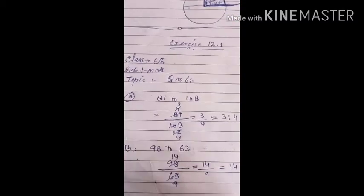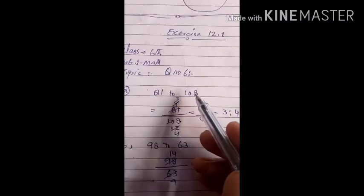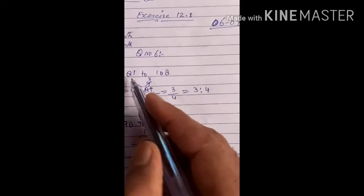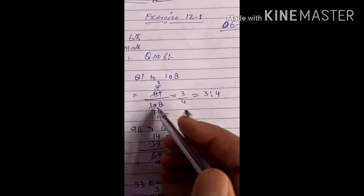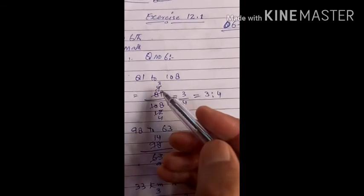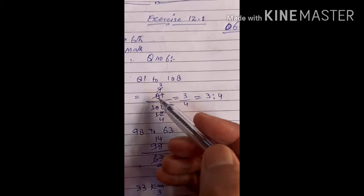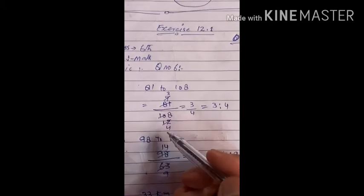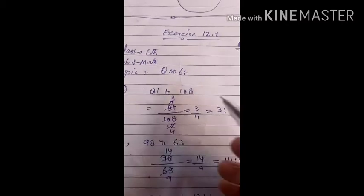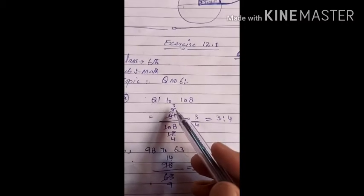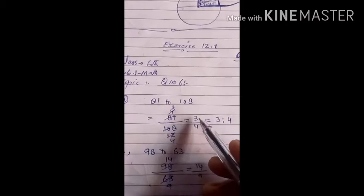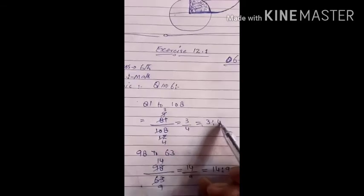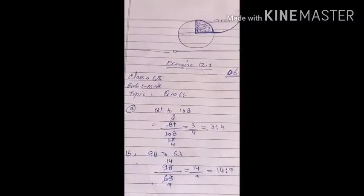Dear students, we need to find the ratio of 81 to 108. So we will write 81 divided by 108, simply. Then we will simplify by dividing by 9: 9 nines are 81, 9 twelves are 108. Then divide by 3: 3 threes are 9, 3 fours are 12. So this gives us 3 by 4, which is equal to 3 is to 4. The ratio we get is 3 is to 4.